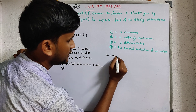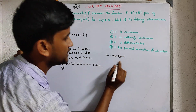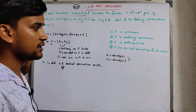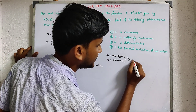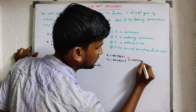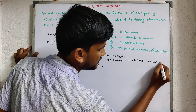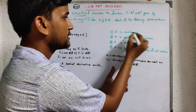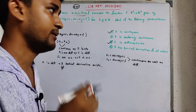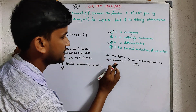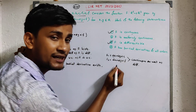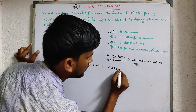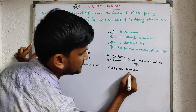Now, F1 = ax + by + c is a linear function of x and y, and F2 = dx + ey + f is also a linear function of x and y. Since both are linear functions, they are both continuous as well as differentiable. Also, F1 and F2 are bounded since they are linear functions — so there is no problem.